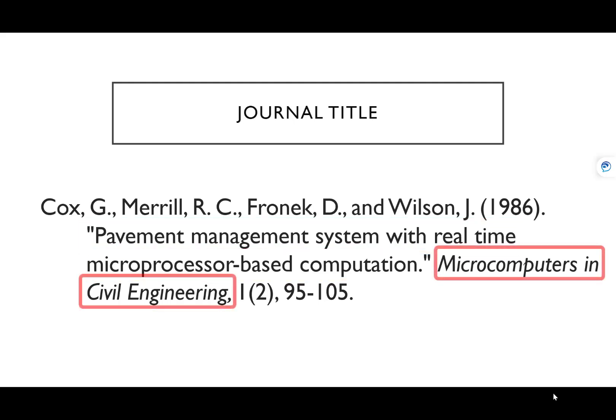After the article title comes the journal title. This is the title of the journal that the article was published in. You capitalize each word of the journal title except for the stop words such as a, the, in, of, etc. And you italicize the entire title and include a comma at the end.